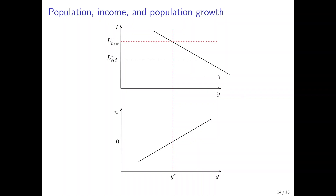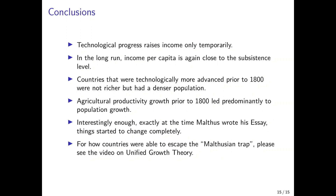So we end up with a new relationship between population size and per capita GDP: a larger population, L star new, but still the same old level of per capita income. This model explains that technological progress can take place, but it does not raise income sustainably — it only raises per capita income temporarily. Then fertility increases, the population size increases, and in the long run, income per capita is again close to the subsistence level. Countries that are technologically more advanced prior to the Industrial Revolution were not richer, but only had a denser population — more people could be fed by a given amount of land.